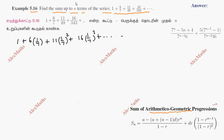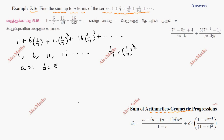This is an Arithmetico-Geometric Progression. The arithmetic part is 1, 6, 11, 16 dot dot dot with first term 1 and common difference 5. The geometric part is 1 by 7, (1 by 7) squared, (1 by 7) cubed dot dot dot with first term 1 by 7 and common ratio 1 by 7. So this is the combination of Arithmetic Progression and Geometric Progression.